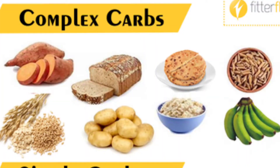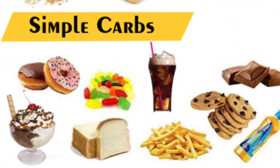Examples of complex carbs include brown rice and brown bread. Examples of simple carbs include white rice. Choose complex carbs like brown rice over simple carbs like white rice for better nutrition.